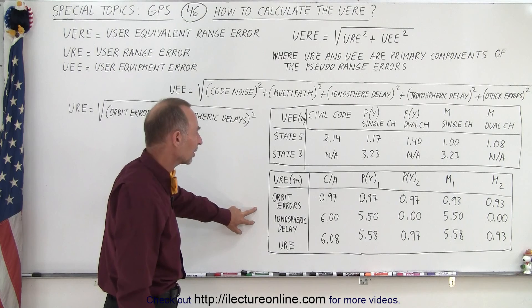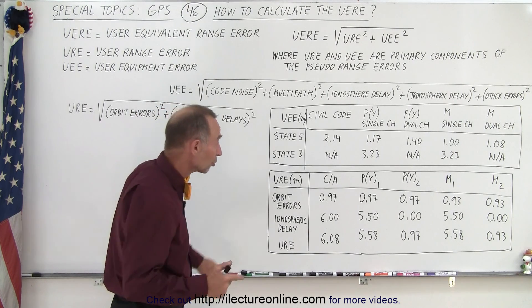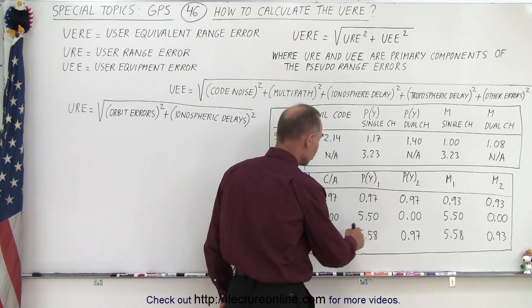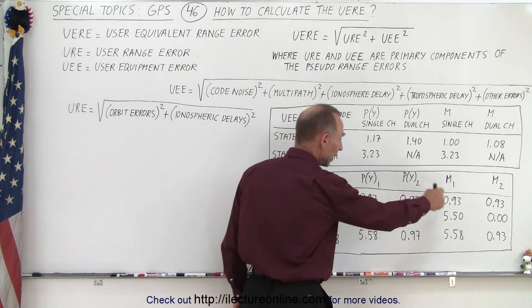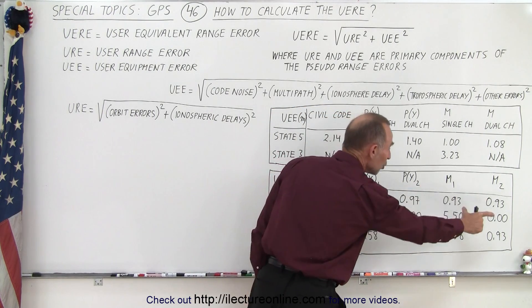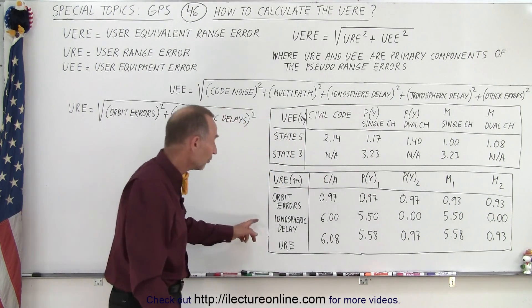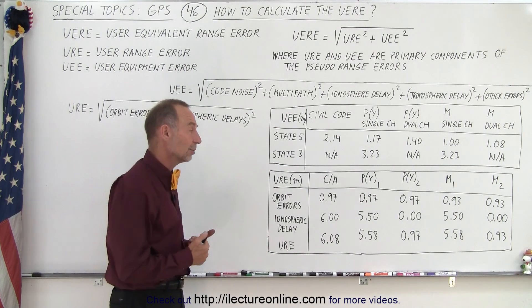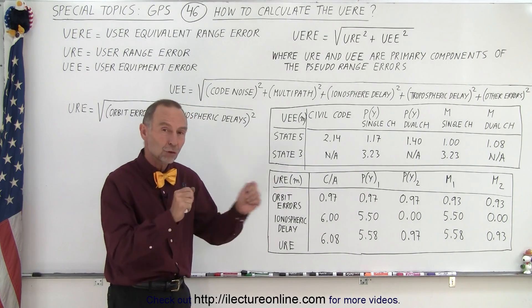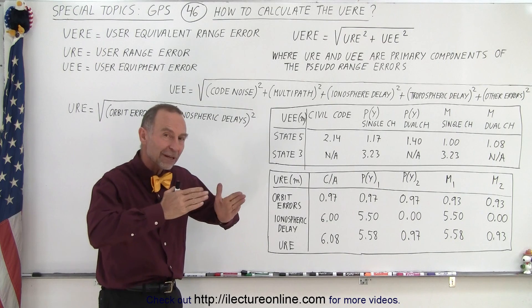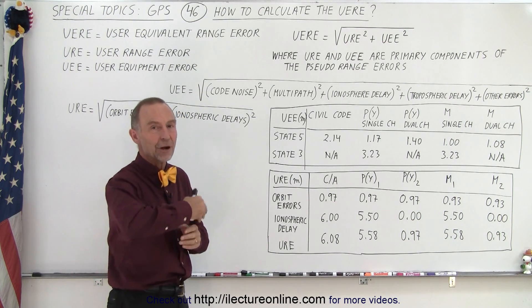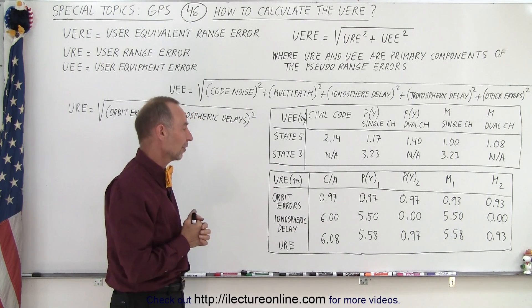And then for the ionospheric delay, we have some relatively large errors if we are in single channel, either CA or Y or M code single channel, but notice there's no errors for the ionosphere if we're in dual channel mode because at that point, having the two channels with two different frequencies, we can get the error out caused by the ionosphere.